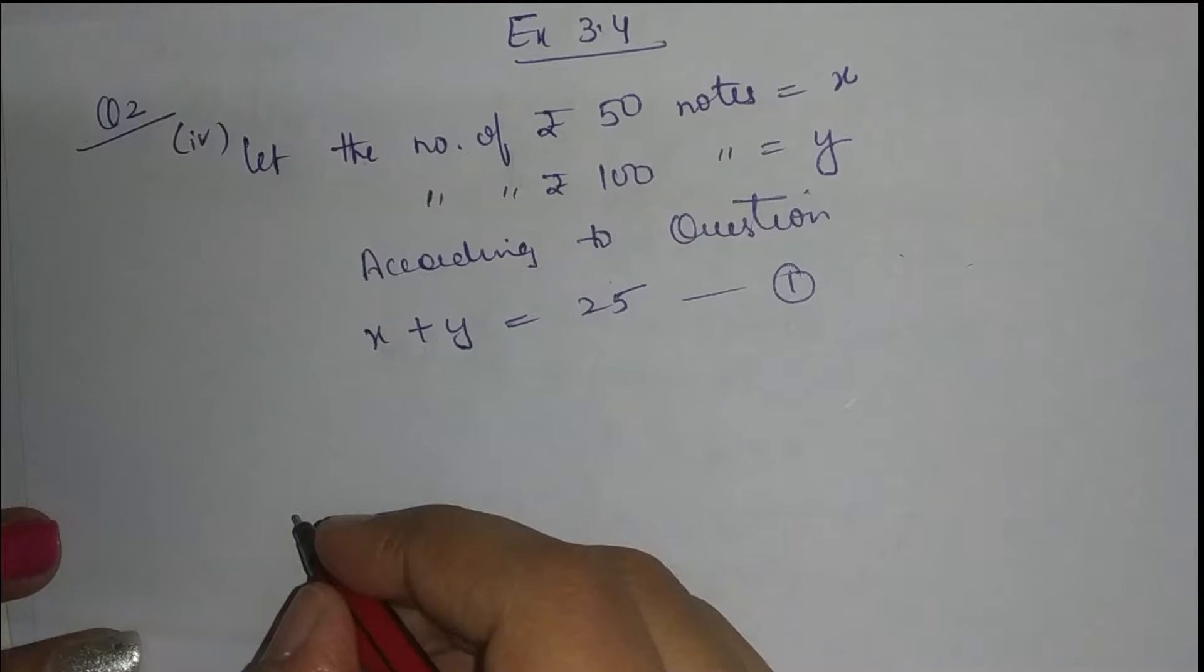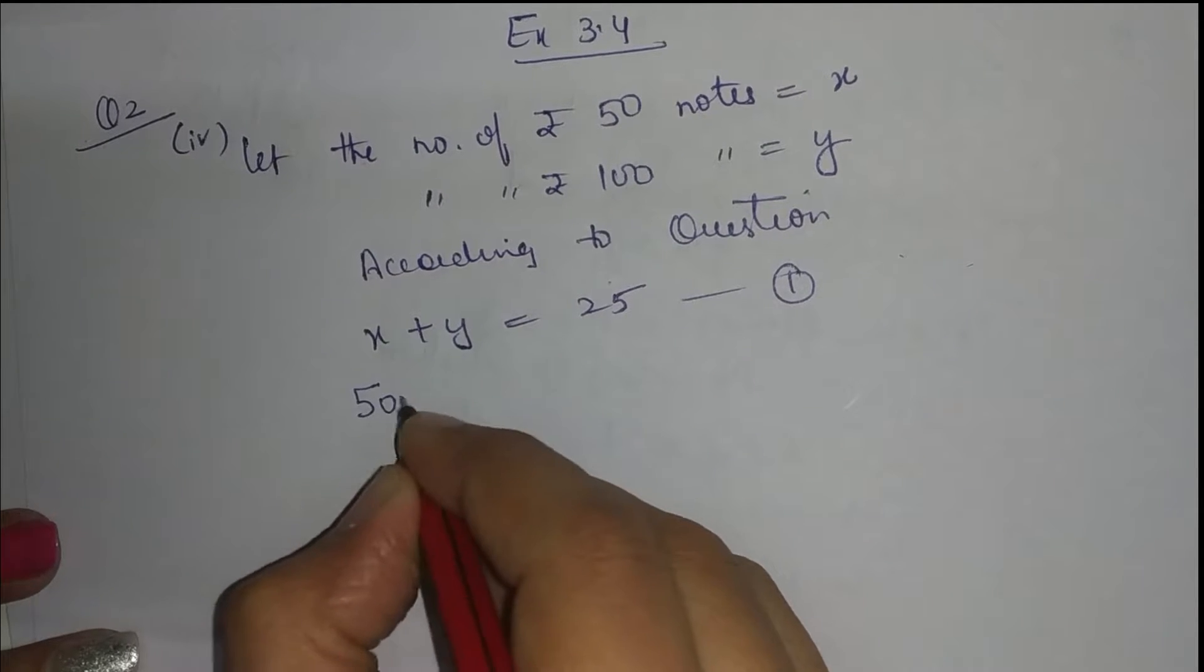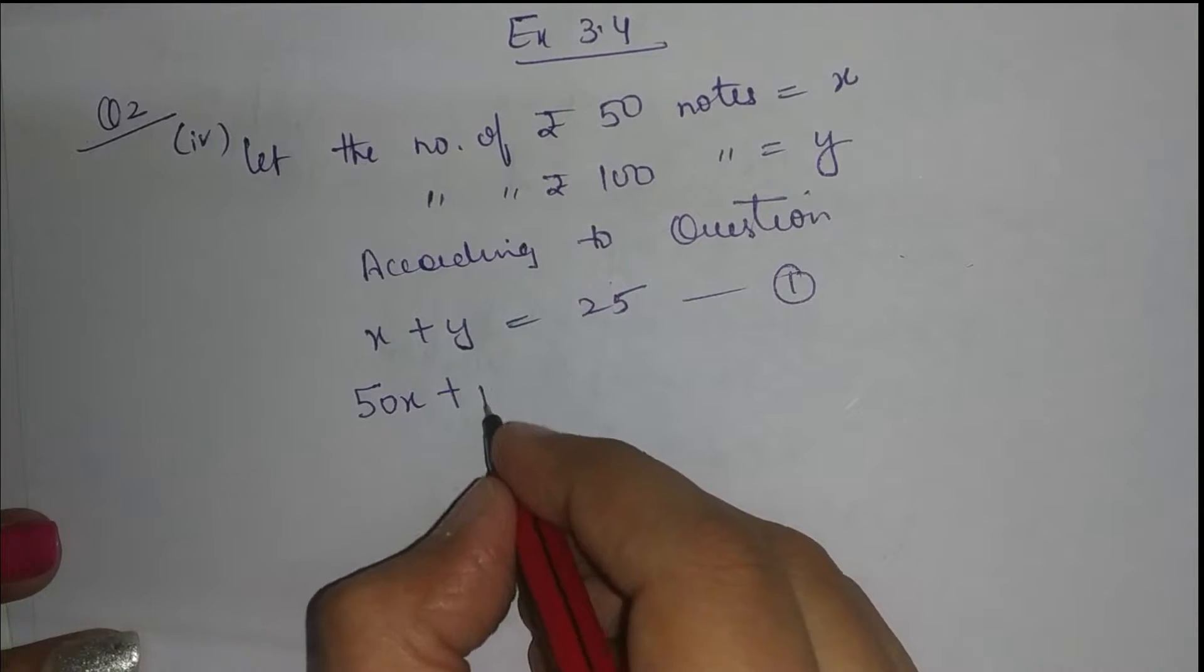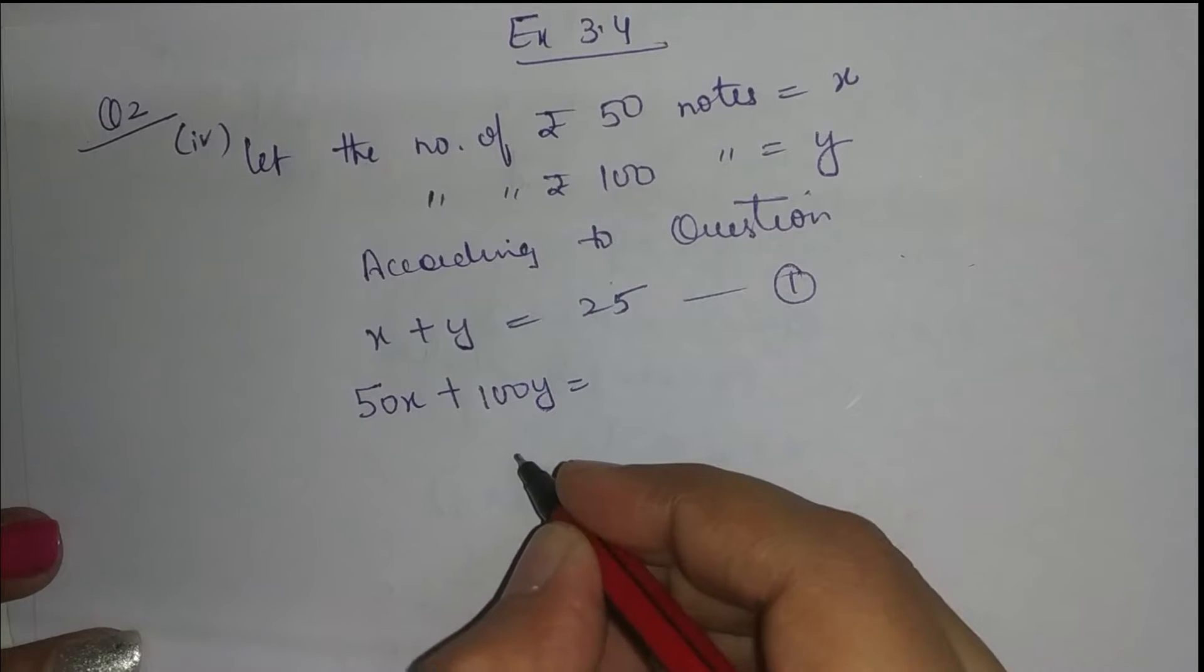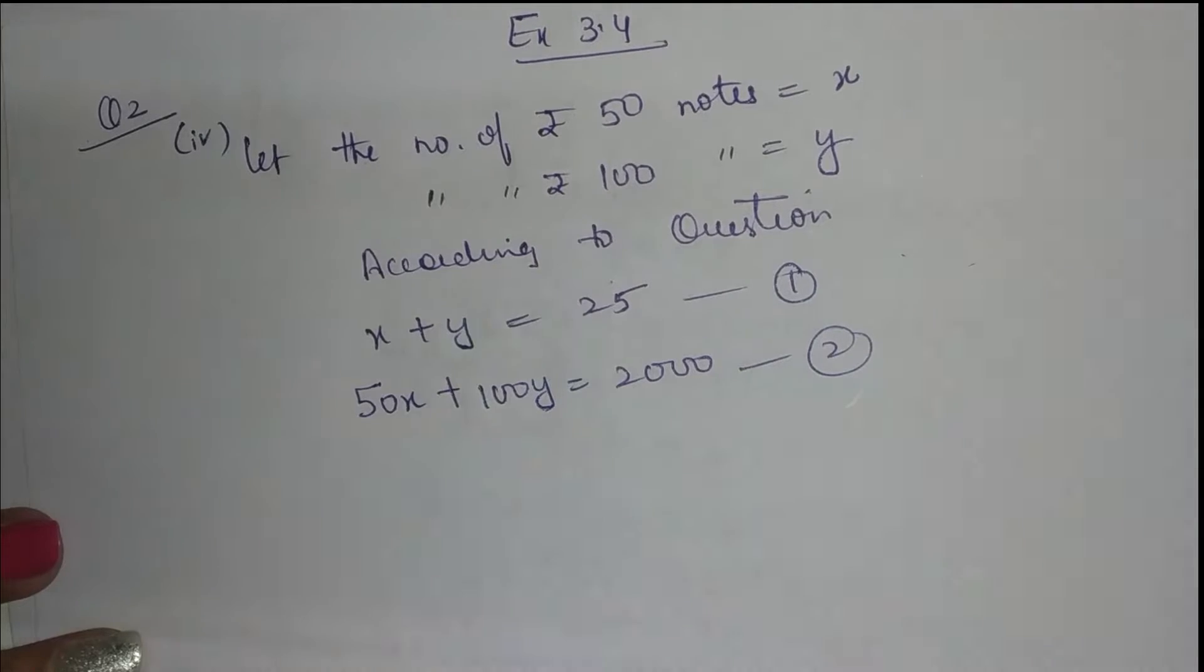Second equation bane ki 50 wale notes uske paas hai, 50x. 100 wale notes hai, 100y. To total usko kitne money nikaalani hai? 2000. To ye bane hai hamaari second equation.